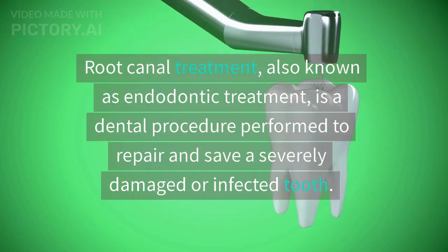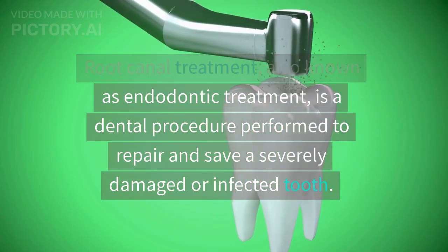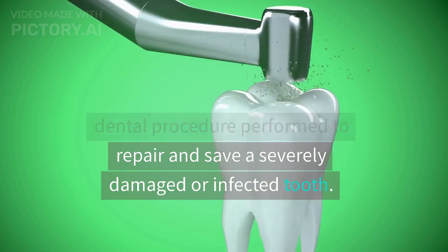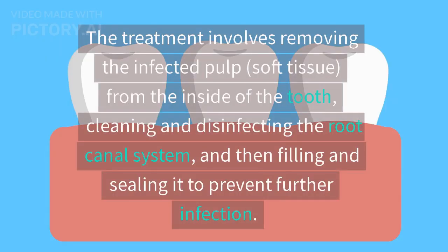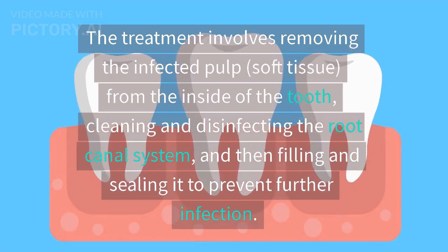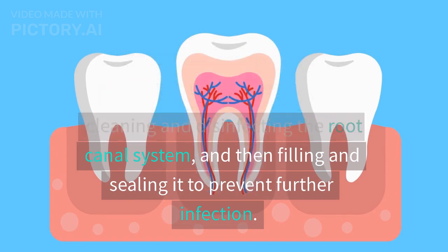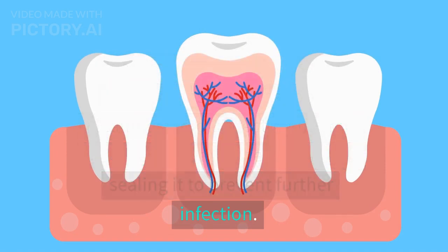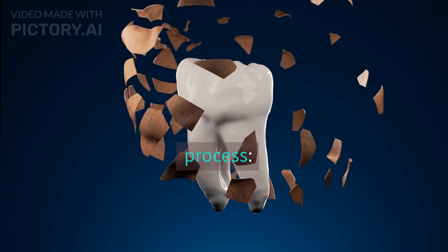Root canal treatment, also known as endodontic treatment, is a dental procedure performed to repair and save a severely damaged or infected tooth. The treatment involves removing the infected pulp, soft tissue, from the inside of the tooth, cleaning and disinfecting the root canal system, and then filling and sealing it to prevent further infection. Here is a step-by-step explanation of the root canal treatment process.